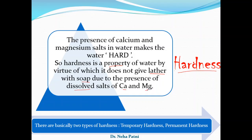If the water contains certain dissolved salts of calcium and magnesium — note that the salts are dissolved in nature, as opposed to suspended or biological impurities — then the water is known as hard water. If you take hard water containing dissolved calcium and magnesium salts and treat it with soap, it will not give you lather properly. This property is known as hardness of water.